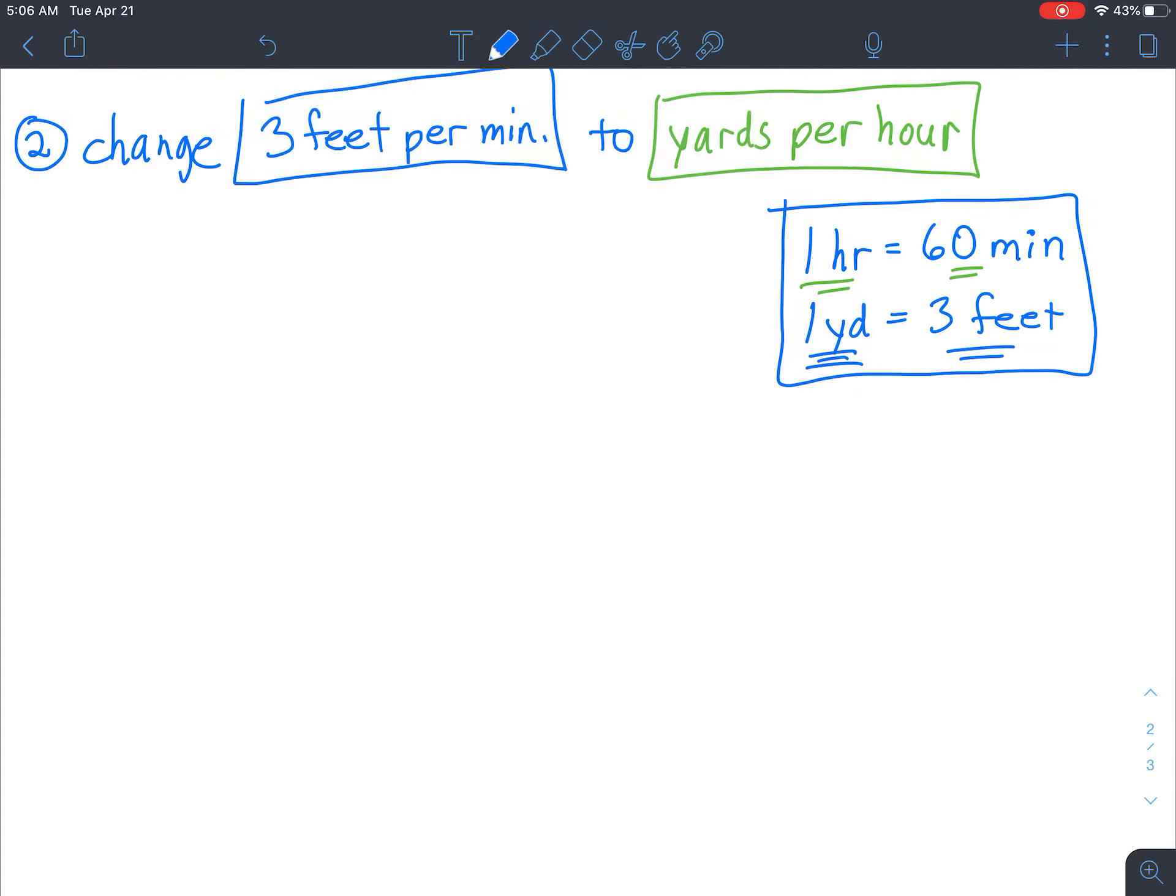So 3 feet per minute. We know where to start, right? We're going to take our 3 feet right here. Put it right there on the top. Usually shorter to use the abbreviations for the unit. So 3 FT for feet. And then per 1 minute. We want to change to yards per hour. So it doesn't really matter which one you start with.